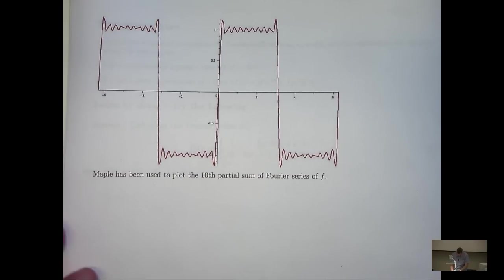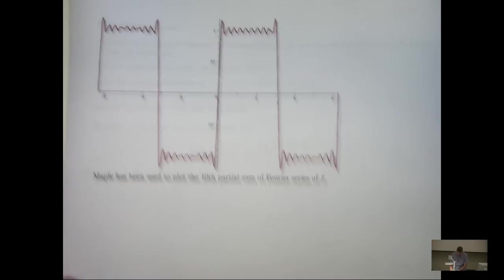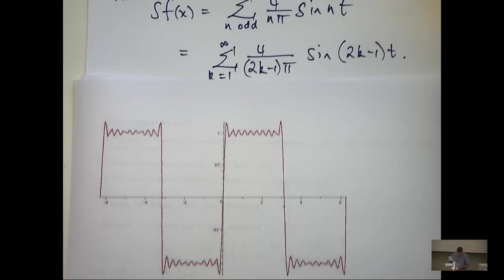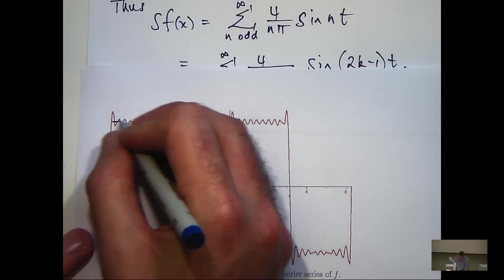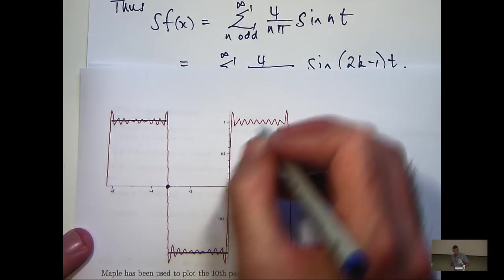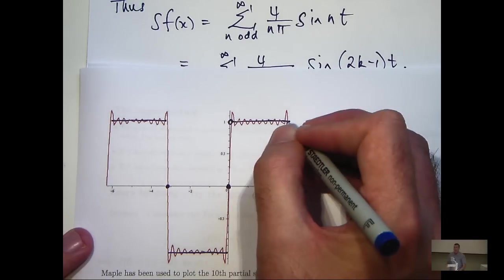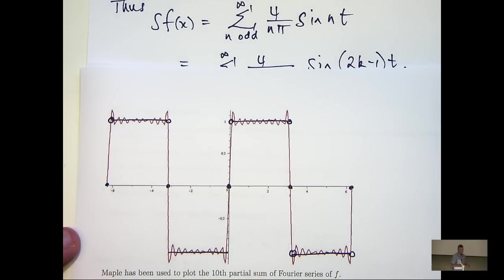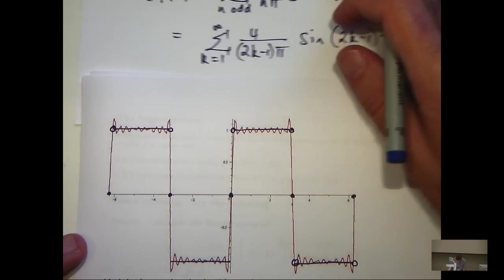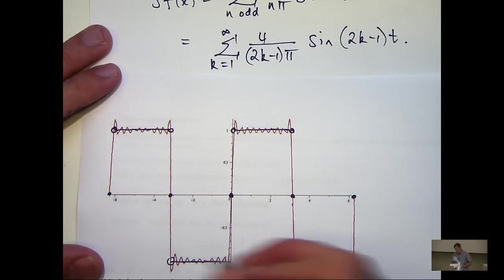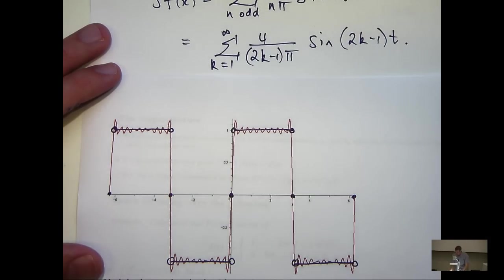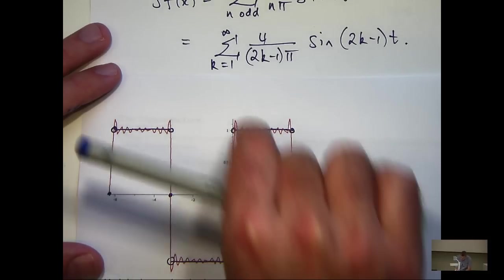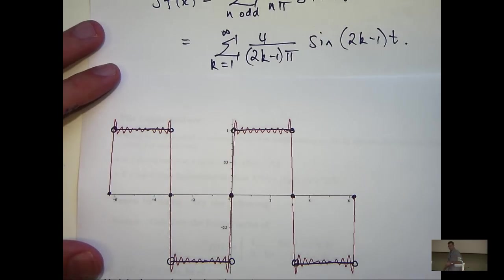So what does it all mean? Well, here I've used Maple to sketch the tenth partial sum of this Fourier series that we just calculated. Now, if you compare that to the actual original f, which looked something like this, then you can see, hopefully, what's happening. The Fourier series is wrapping itself around this original f of t. And as we increase the partial sum, so let's say we went to the hundredth partial sum, the wrapping would get tighter and tighter. And in the limit, it would actually converge to the original function f of t.